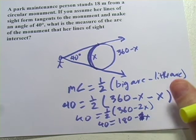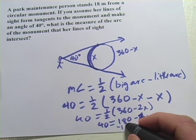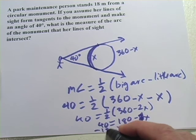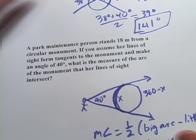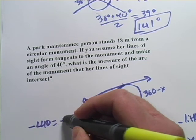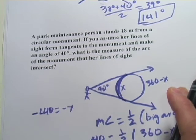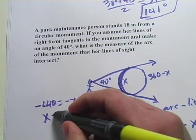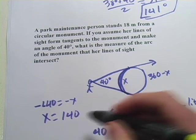I've run out of room here so I'm going to move over. When I subtract 180 from both sides to get the x alone, I get negative 140 equals negative x. If I multiply both sides by a negative 1, I would get x equals 140 degrees.